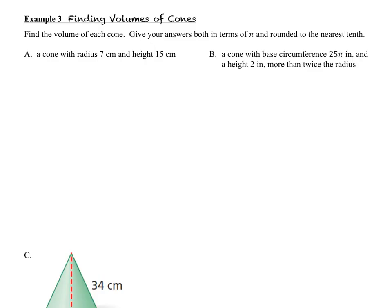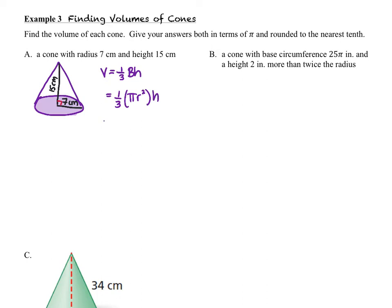We want to find the volume of each cone, giving answers both in terms of pi and rounded to the nearest tenth. In question A, we have a cone with radius 7 centimeters and a height of 15 centimeters. The volume of a cone is one-third pi r squared times h. Substituting, we get V equals 245 pi cubic centimeters. Multiplying pi through, that's approximately 769.7 cubic centimeters.